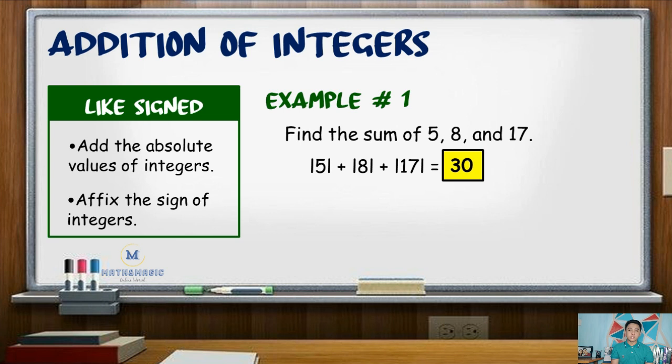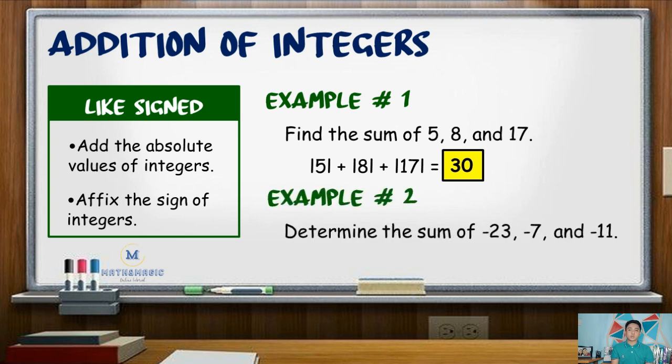For example number 2, determine the sum of negative 23, negative 7, and negative 11. Again, get the sum of the absolute values of the integers.